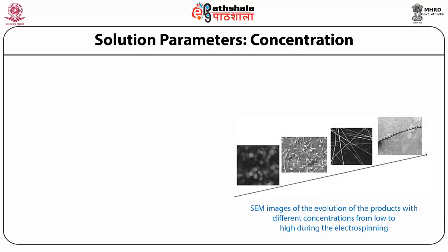I want to discuss the several parameters which one needs to care about during electro-spinning for good quality growth of nanofibers. Working parameters are very important — one needs to understand not only the nature of electro-spinning but also the conversion of polymer solution into nanofibers. These parameters can be broadly divided into three parts: solution parameters, process parameters, and ambient parameters. Each of these parameters can affect fiber morphology, and by proper control we can fabricate electro-spun fibers with desired morphology and diameter.